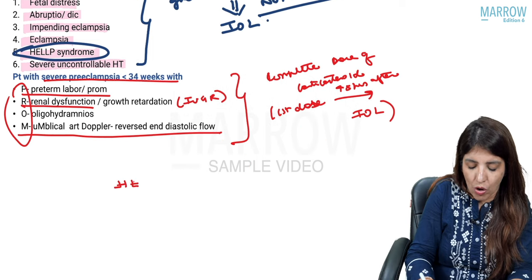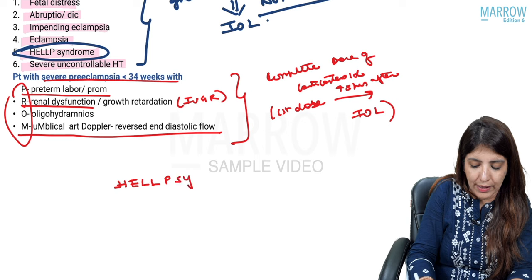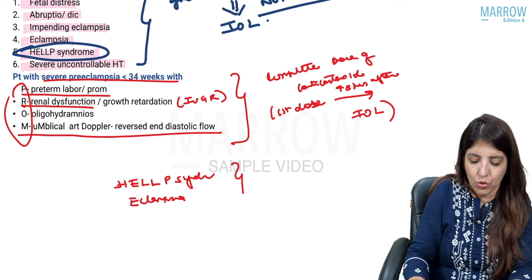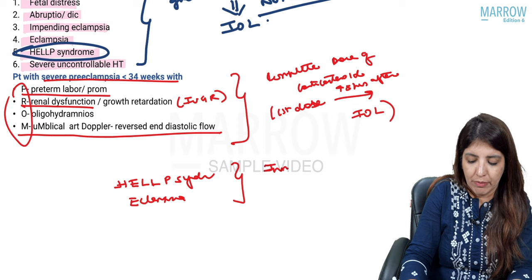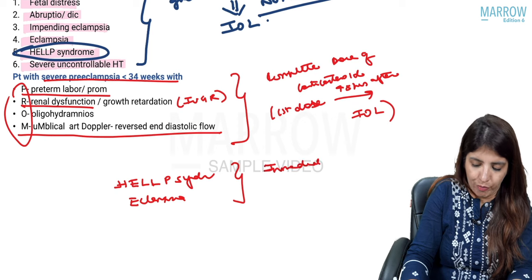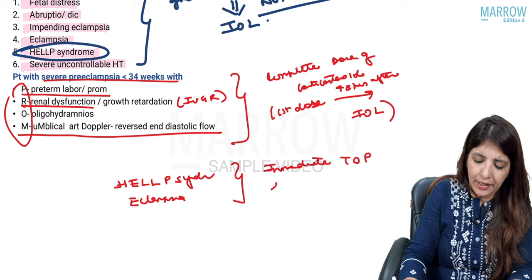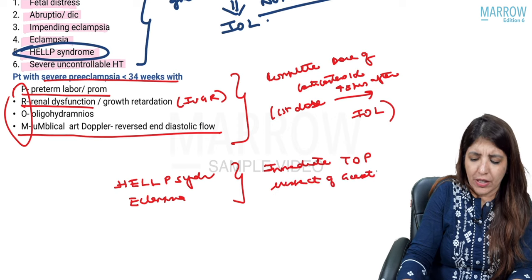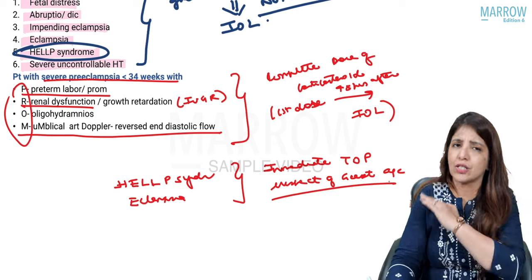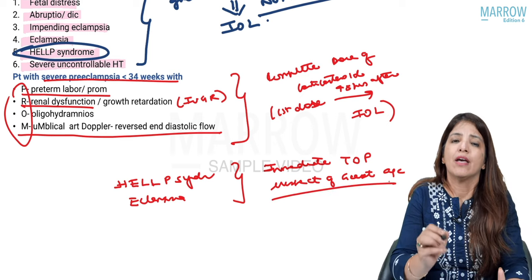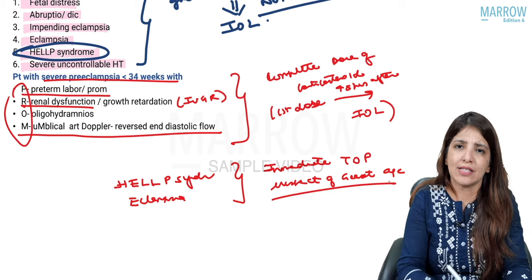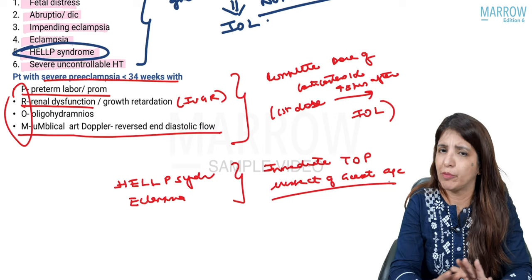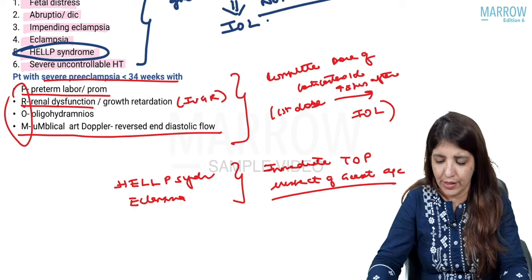In case of HELLP syndrome and eclampsia, do immediate termination of pregnancy irrespective of gestational age. If patient is less than 34 weeks, just give a single shot of corticosteroids and do induction of labour — do not wait 48 hours.